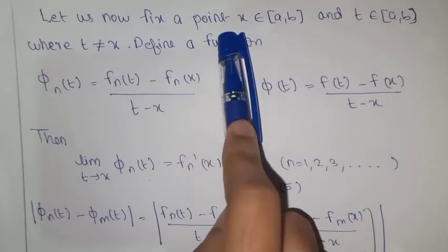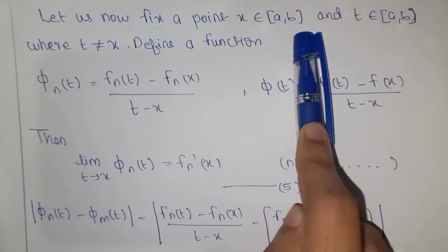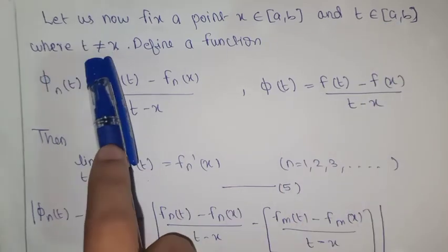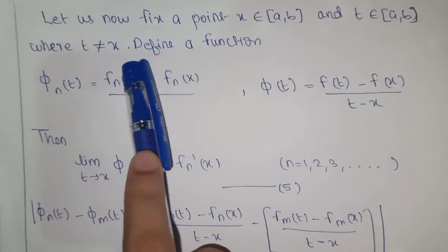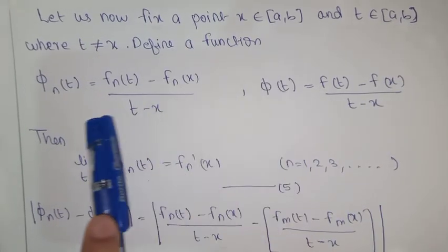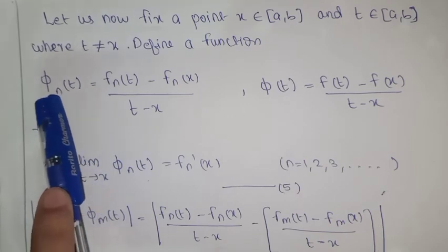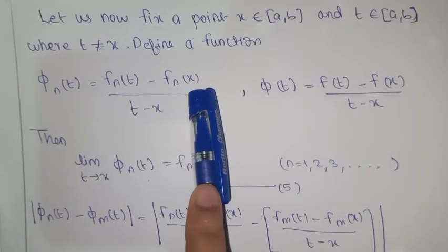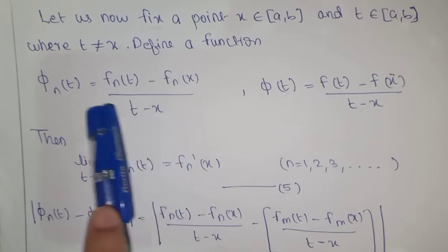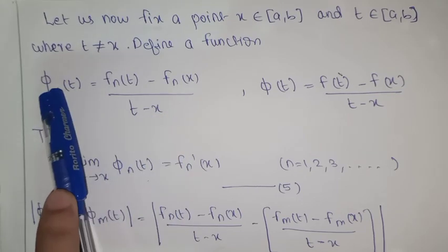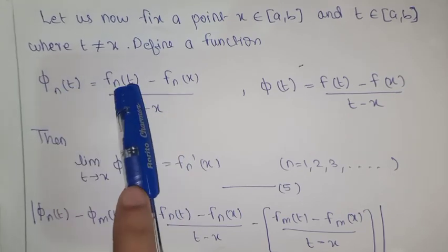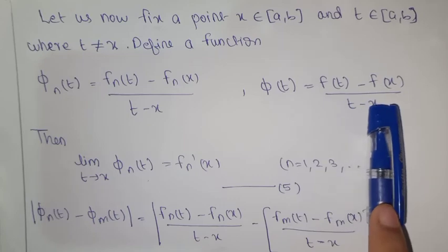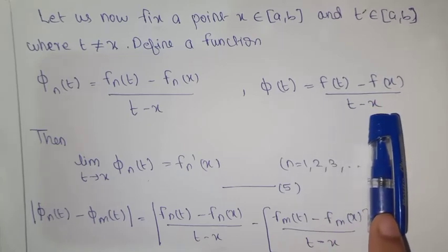Now we need to prove that f'(x) = lim(n→∞) fn'(x). Let us fix a point x in [a, b] and t in [a, b] where t ≠ x. Define a function φn(t) = (fn(t) - fn(x)) / (t - x), and correspondingly φ(t) = (f(t) - f(x)) / (t - x).